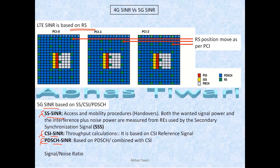Your 4G SINR is based on reference signals — RS or reference signal received power. So in 4G, SINR is based on RS reference signals. Here you have three resource grids divided into PCI 0, 1, and 2. The reference signal position in the frequency domain changes with the change in PCI. That is why you have mod-3 PCI planning, so that the reference signal position changes and interference is avoided.